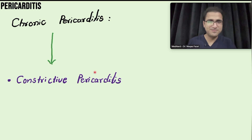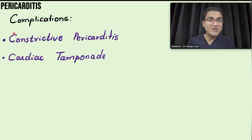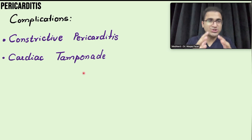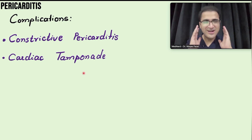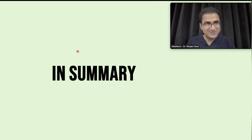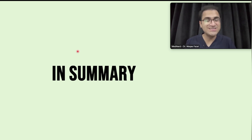Complications of pericarditis include constrictive pericarditis and cardiac tamponade, where pericardial effusions put pressure on the heart. Detailed videos on cardiac tamponade, constrictive pericarditis, and pericardial effusion are available on the channel.